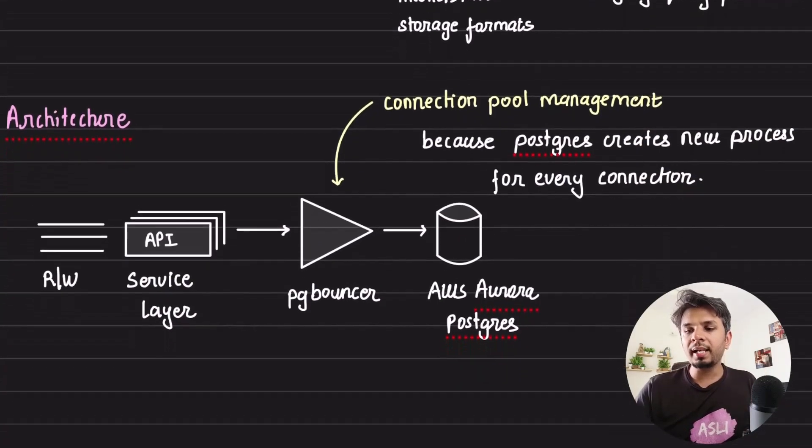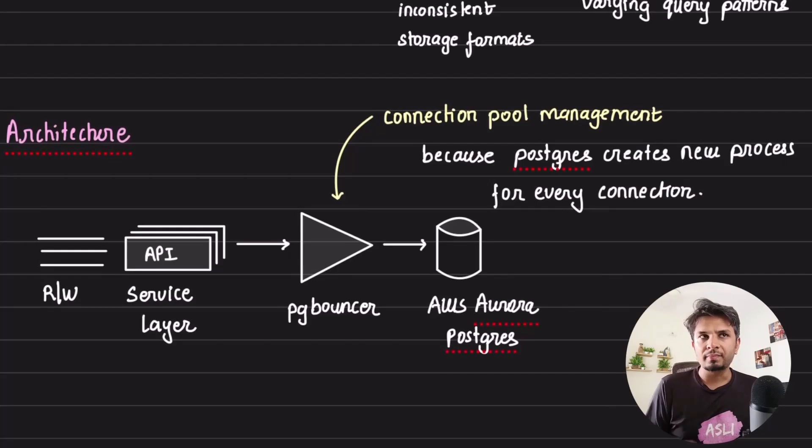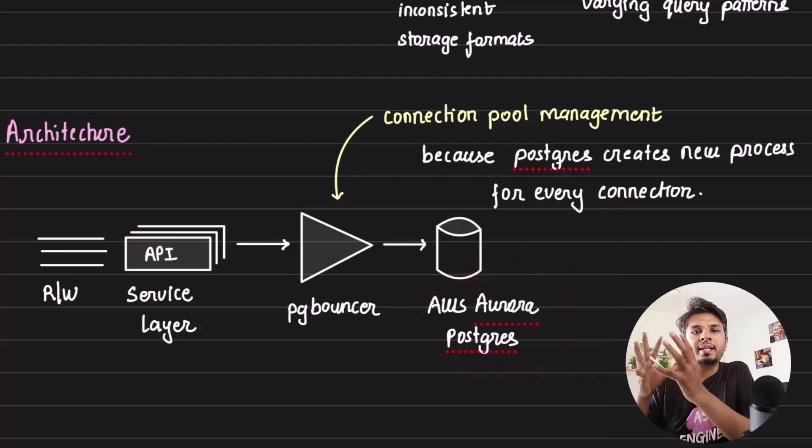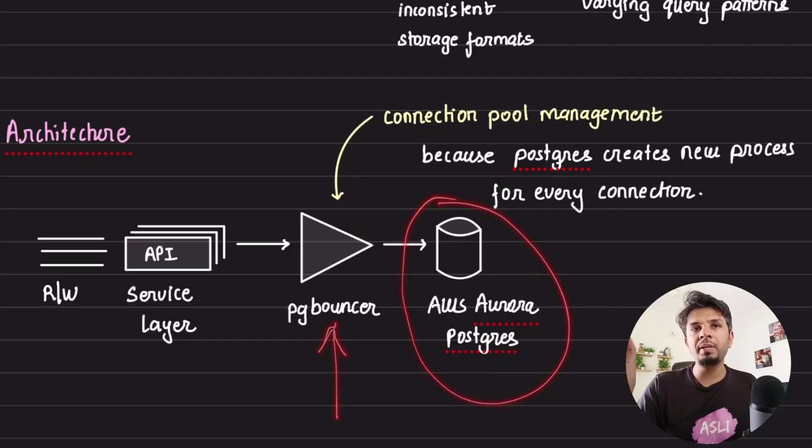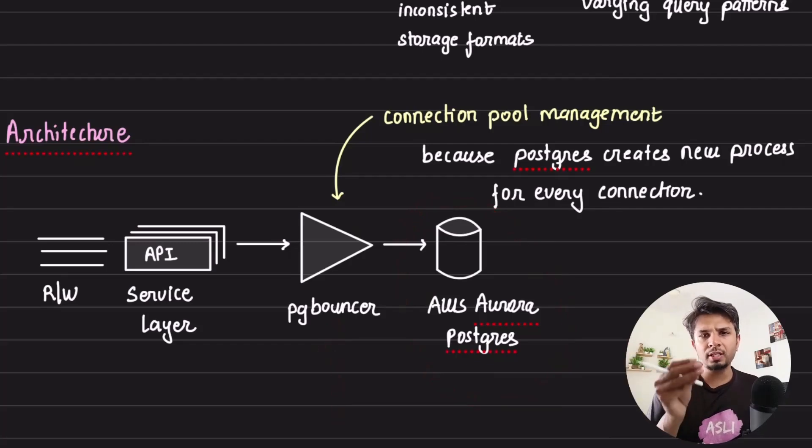They architected a very interesting solution. They chose AWS Aurora Postgres to hold the metadata. This would become their unified metadata store. Because they were using Postgres, they had to have a PG bouncer in front of it. PG bouncer is a simple proxy that does connection pooling for Postgres.